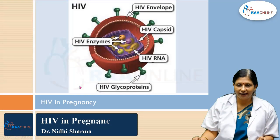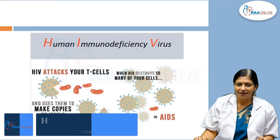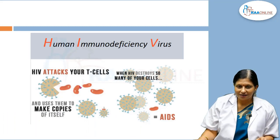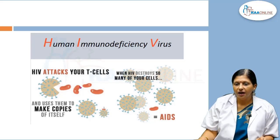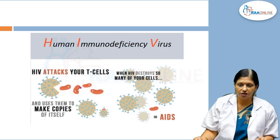Welcome to RA Online. Today's topic is HIV in pregnancy. The human immunodeficiency virus attacks your T cells, uses them to make copies of itself, and destroys many of them. When the clinical signs and symptoms manifest in the patient, it is called acquired immunodeficiency syndrome.